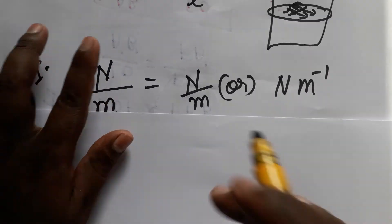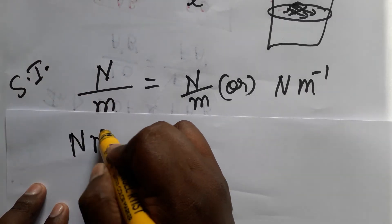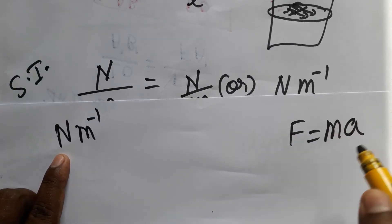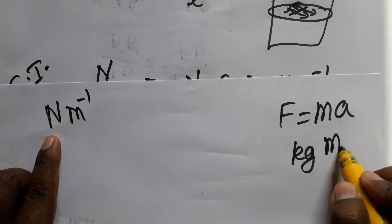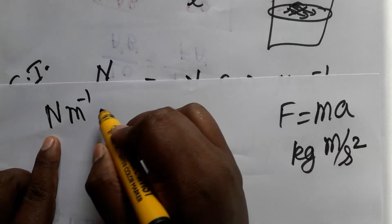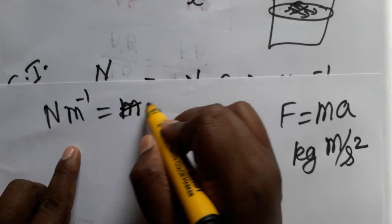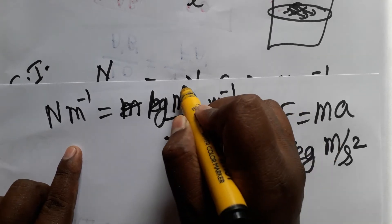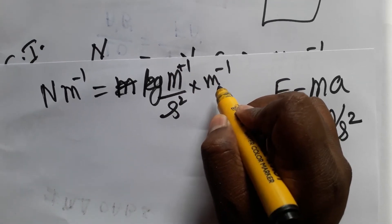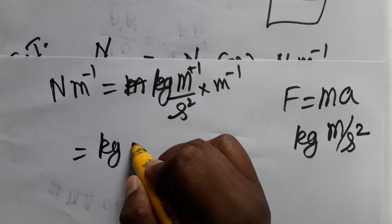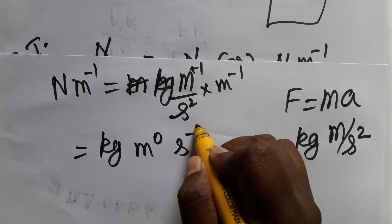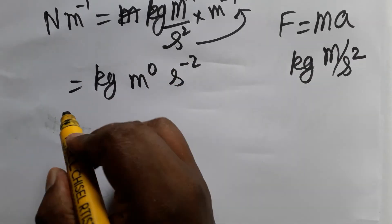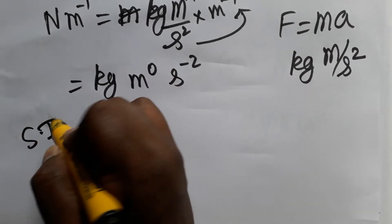The SI unit of surface tension is newton meter inverse. Newton is the force unit, and force equals mass times acceleration. Mass SI unit is kg, and acceleration SI unit is meter per second squared. So newton equals kg·m·s⁻². Multiplying by meter inverse gives kg·m⁰·s⁻², and since meter power becomes zero, the SI unit simplifies to kg·s⁻².